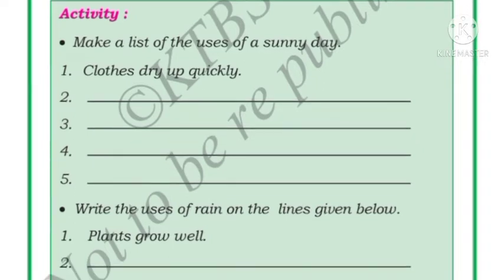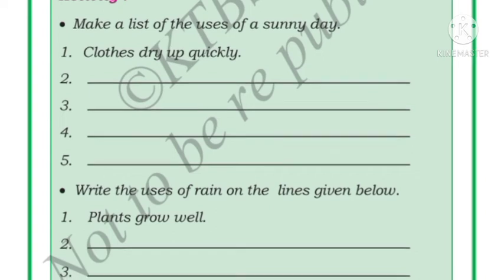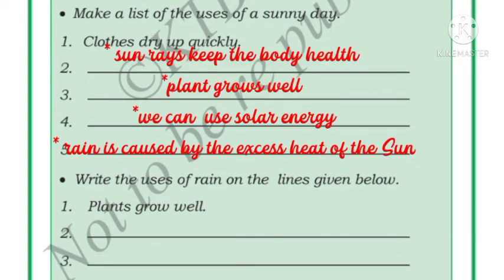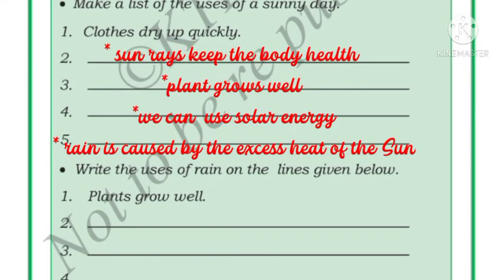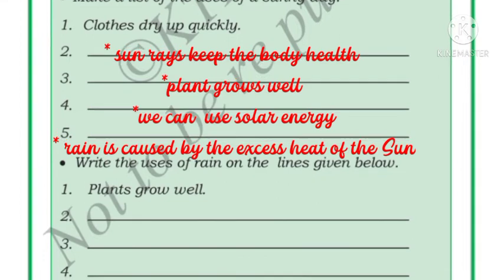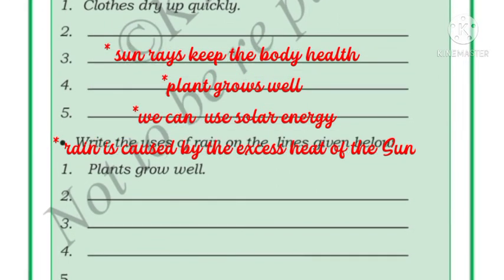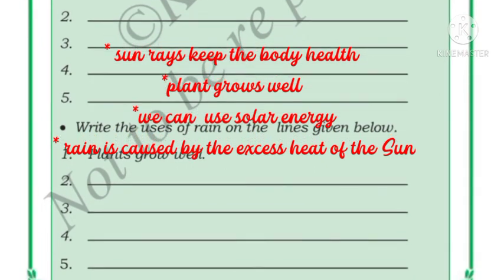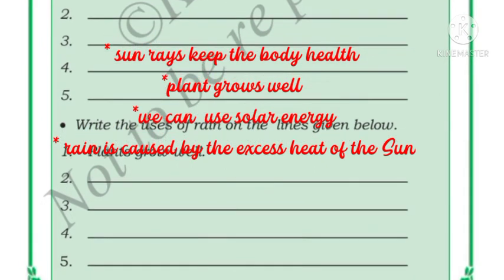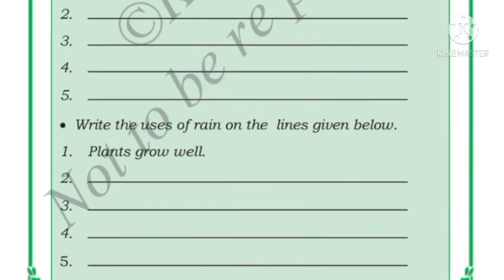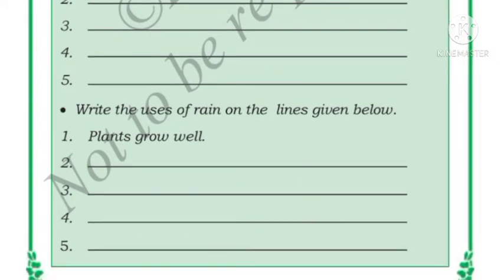Activity: Make a list of the uses of sunny days. First, clothes dry up quickly. Second, sun rays keep the body healthy. Third, plants grow well in sunny days. Fourth, we can use solar energy for different purposes. Rain is also caused by the excess heat of the sun.